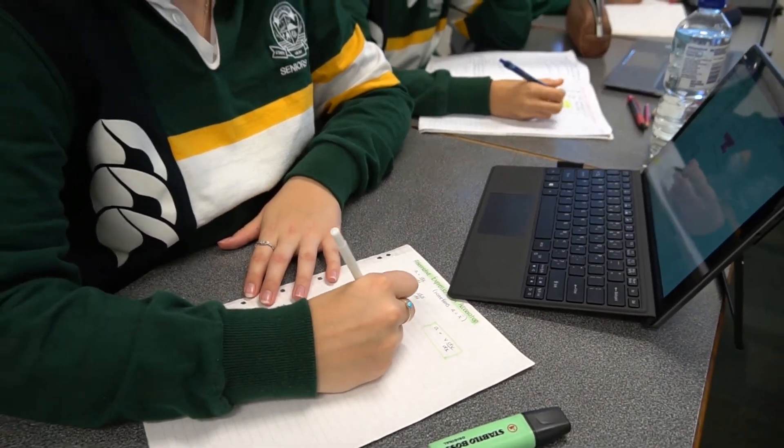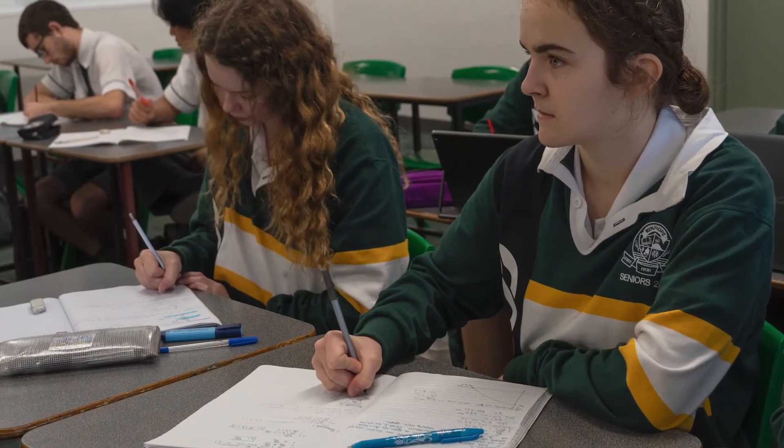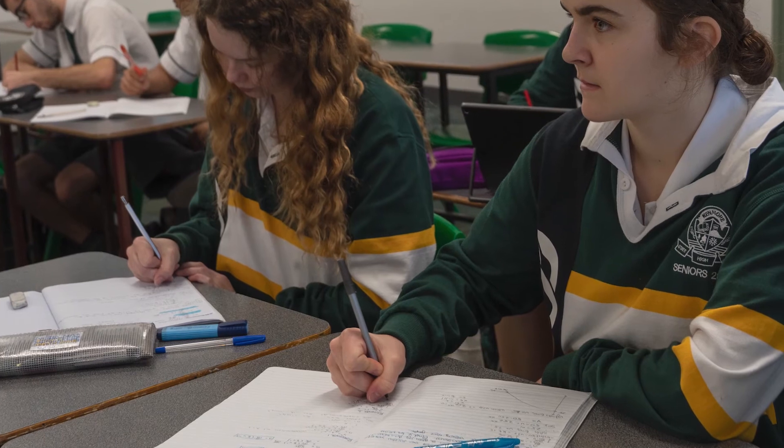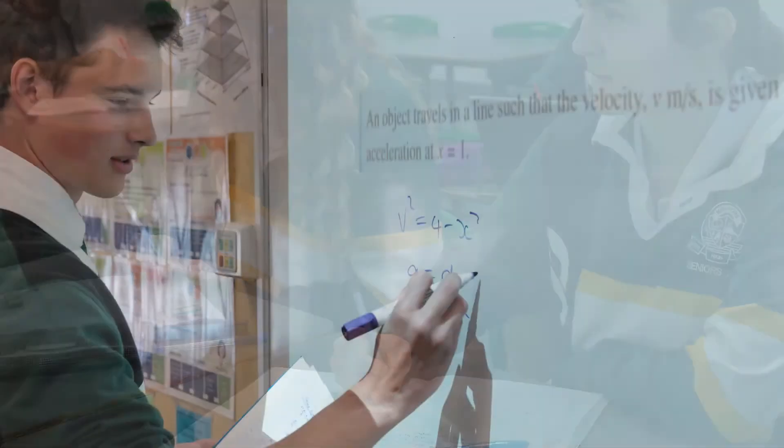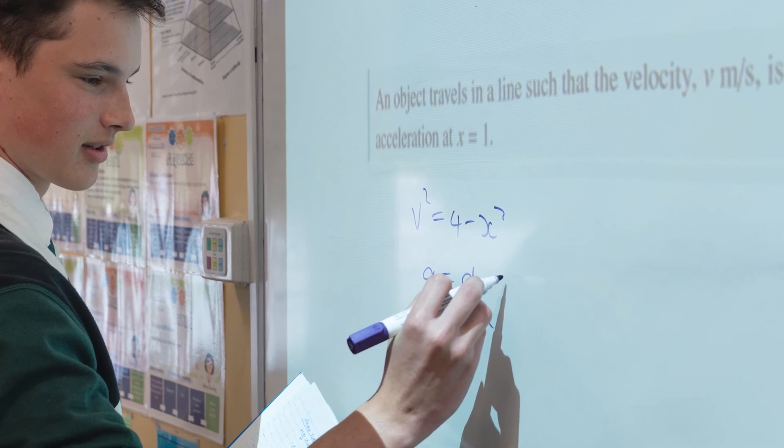To do specialist mathematics, you will need at least a B in extension mathematics in year 10, so if you're planning on doing engineering, mathematics, IT software engineering, science, math-based degrees or even if you enjoy mathematics, you should consider specialist mathematics.